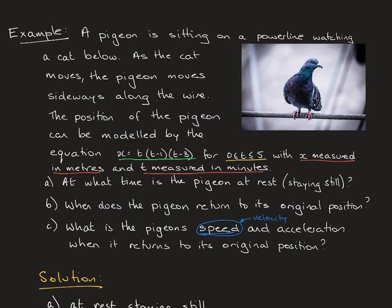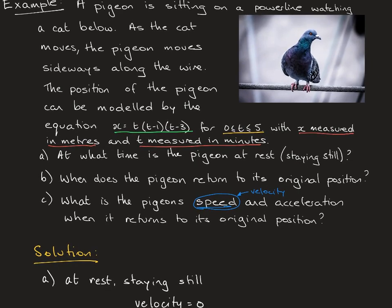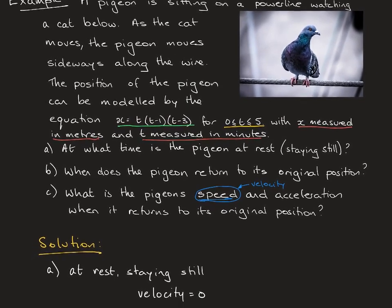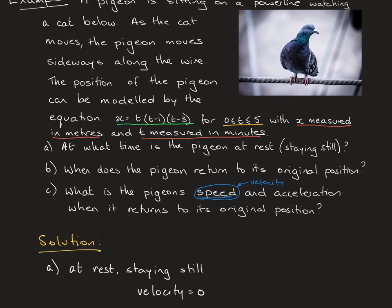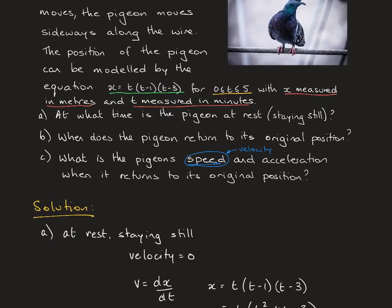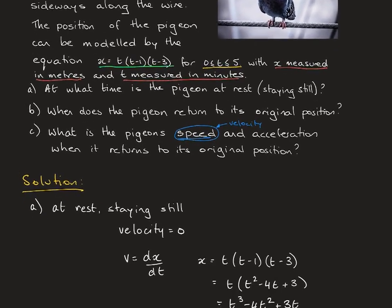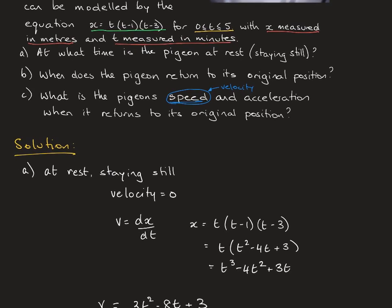Note that the question says 'speed' — often speed and velocity are used interchangeably in these questions, and we're going to find the velocity. I'll do this whole thing by hand first, which will be a bit tedious; if you want, fast forward and at the end I'll show you how to do it quickly on your CAS calculator. For part a, the pigeon being at rest means it's not moving, so its velocity equals zero. We need to find our velocity, which is the derivative of our X function.